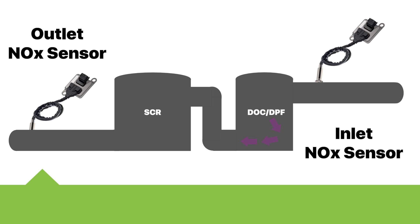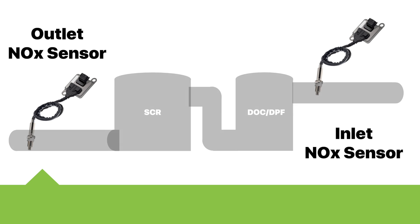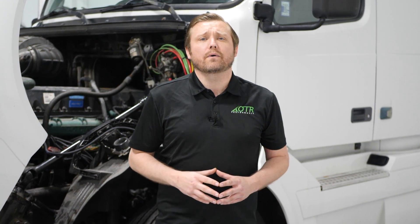A defective SCR operation can cause the most dreaded 'service DEF — vehicle speed limited to 5 miles per hour.' If this happens, you need to clear the SCR D-Rate with a dealer-level tool or use the reset tool by OTR Performance. The reset tool will remove the D-Rate message off the instrument panel and will allow you to drive past 5 miles per hour. You can have no active codes and still be D-rated to 5 miles per hour.